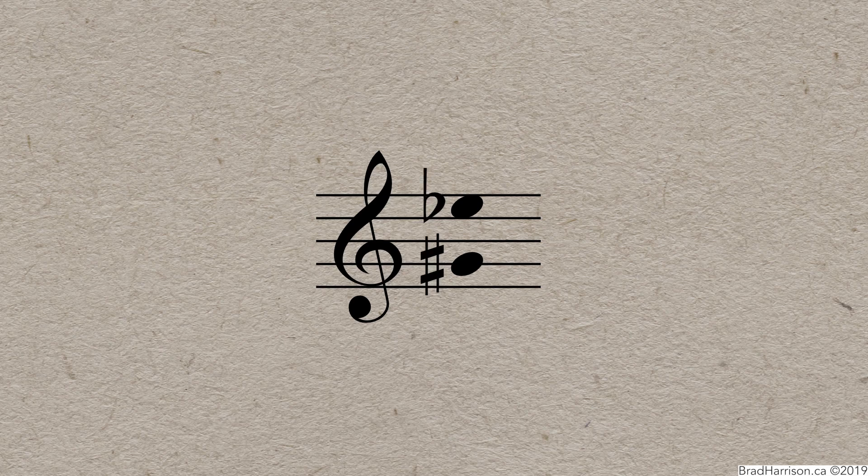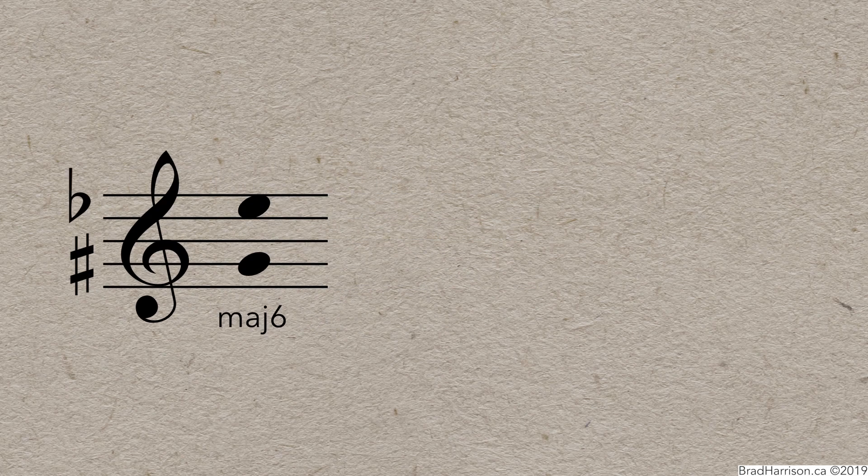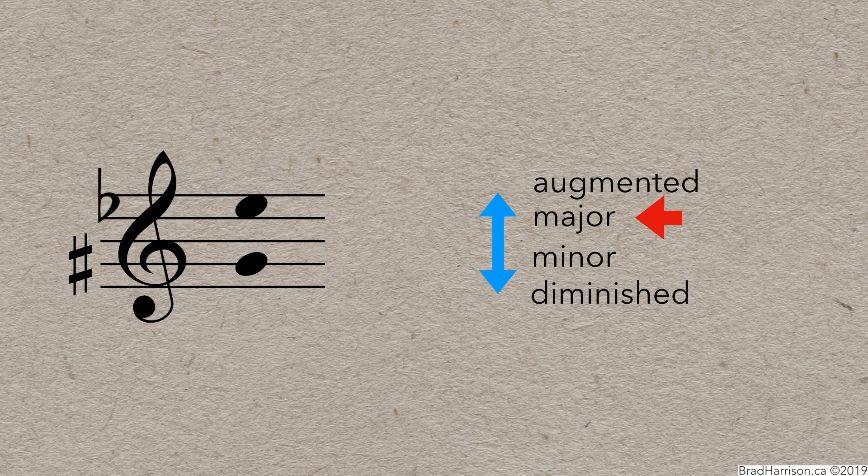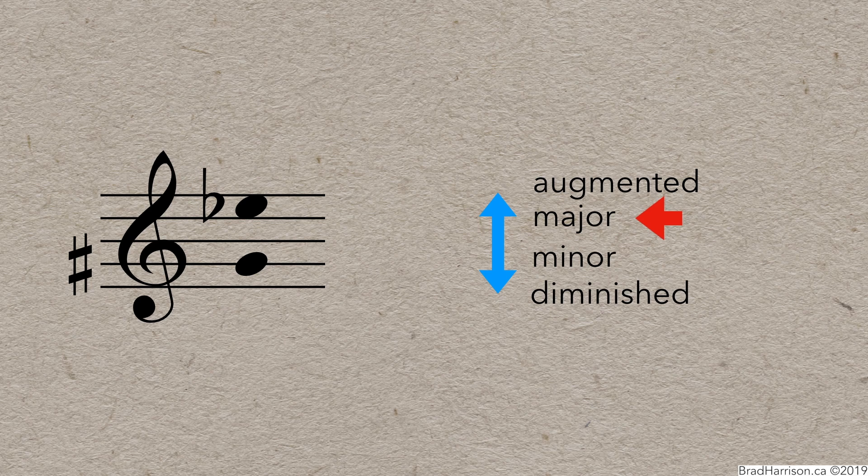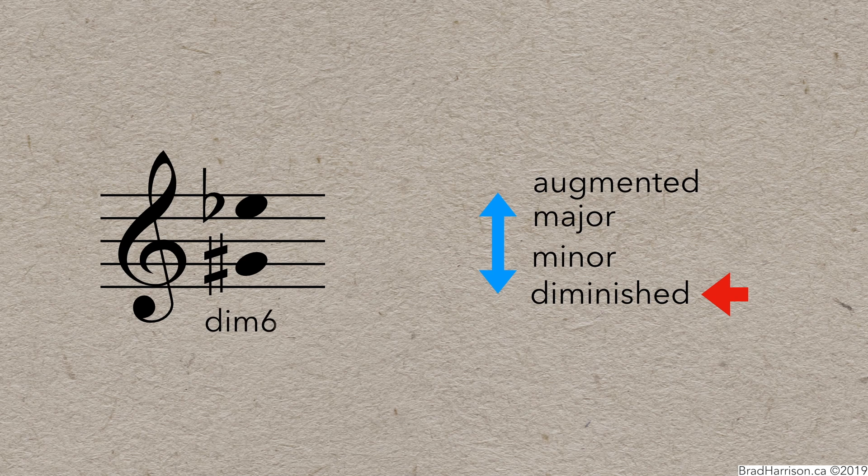Let's try another, G-sharp to E-flat. Ignoring the accidentals, we see a major 6th. When we add the accidentals back in, we see that the flat on the E makes the interval one semitone smaller, so it becomes minor. Then the sharp on the raised bottom note makes the interval smaller by another semitone. That's a 6th that's two semitones smaller than the major, and that means G-sharp to E-flat is a diminished 6th.